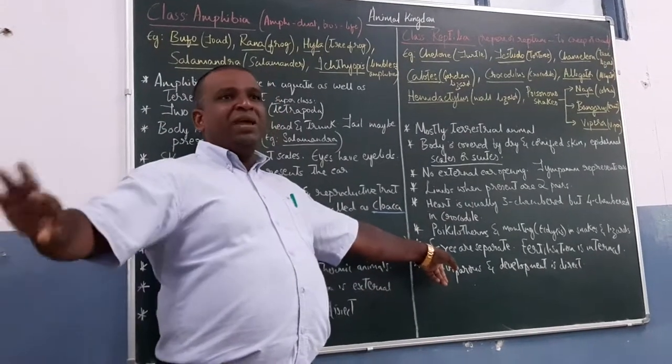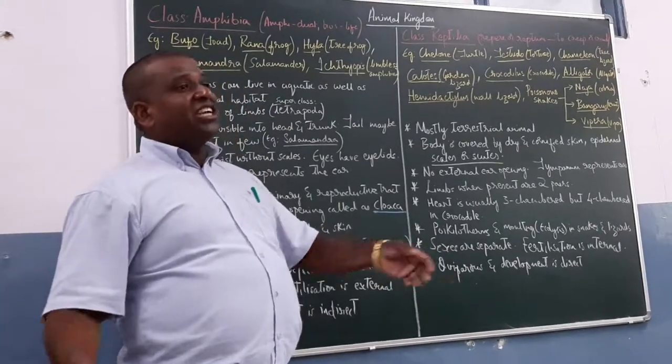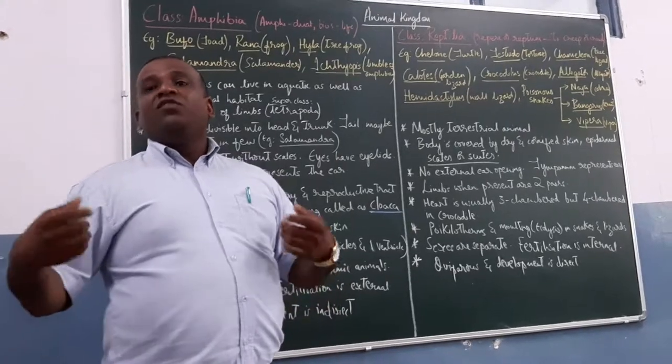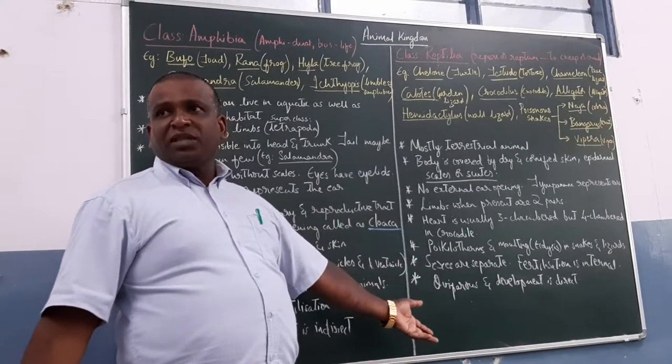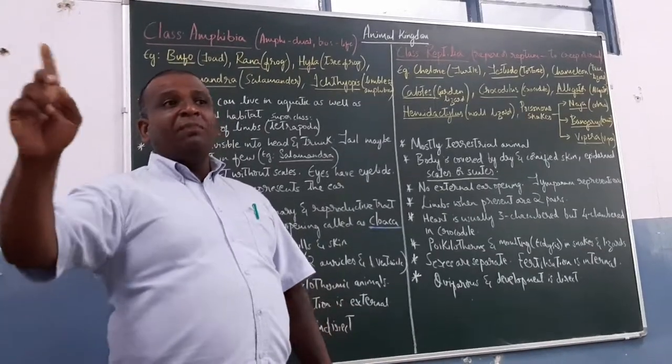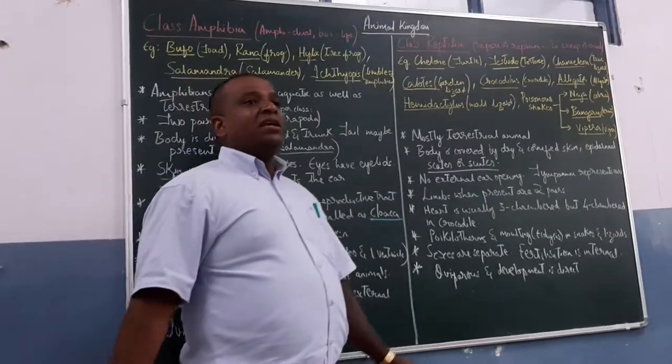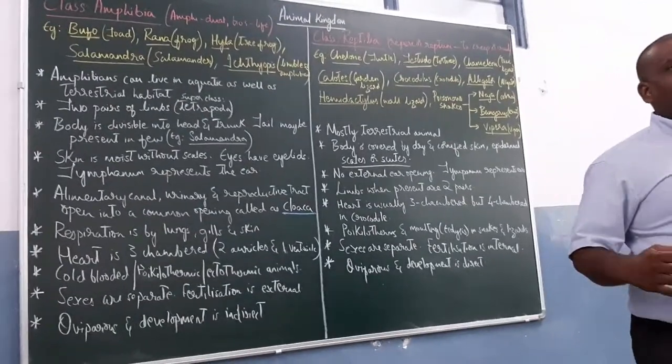Sexes are separate. Male and female are separate. They have copulatory organs. Fertilization is internal. That implies fertilization is within the female genital tract. And they are egg-laying animals, oviparous. And development is direct. It is not indirect. Development is direct. So these are the characteristics of reptiles that you have to remember.